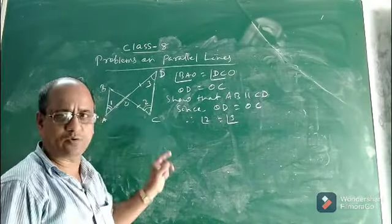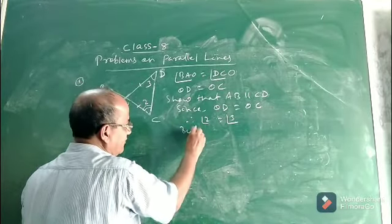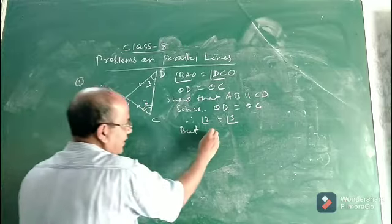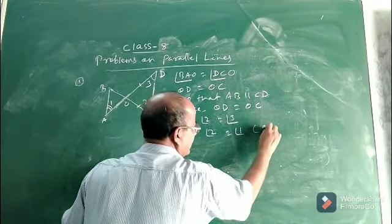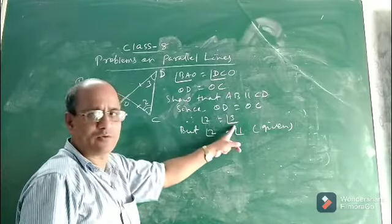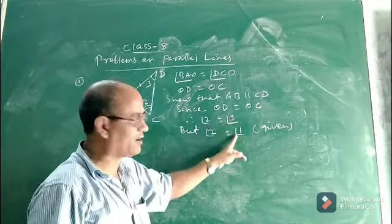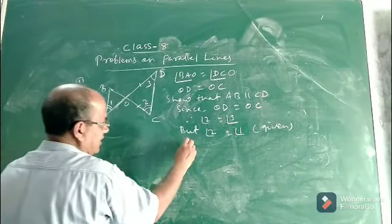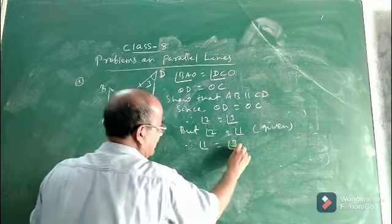So angle two equals angle three. But we are given that angle two is equal to angle one. Therefore, since angle two equals angle three and angle two equals angle one, angle one and angle three must also be equal.